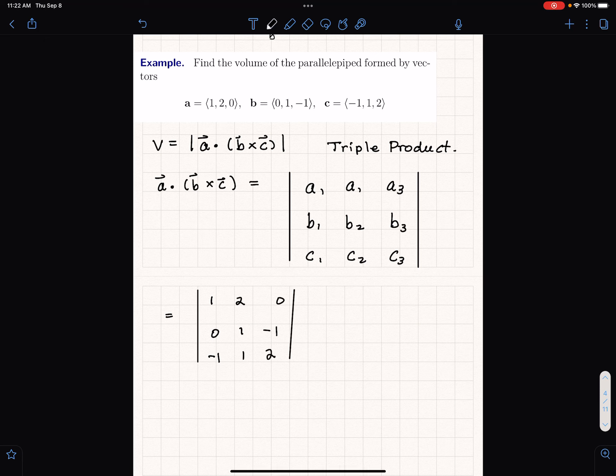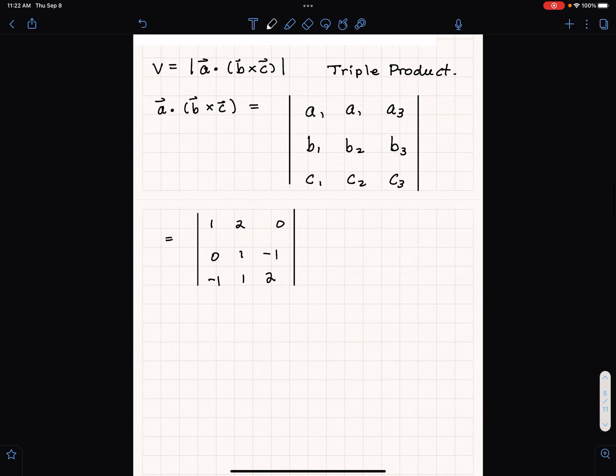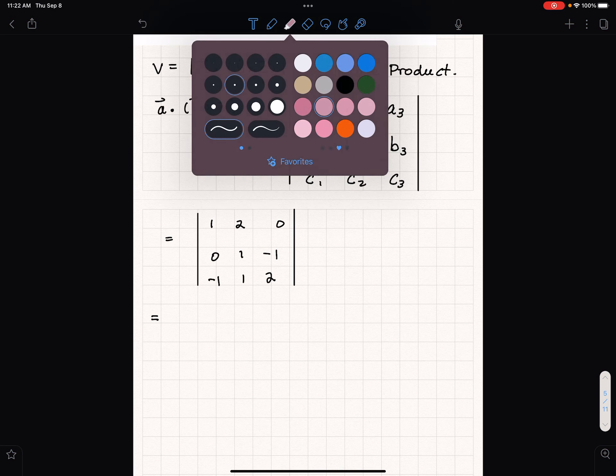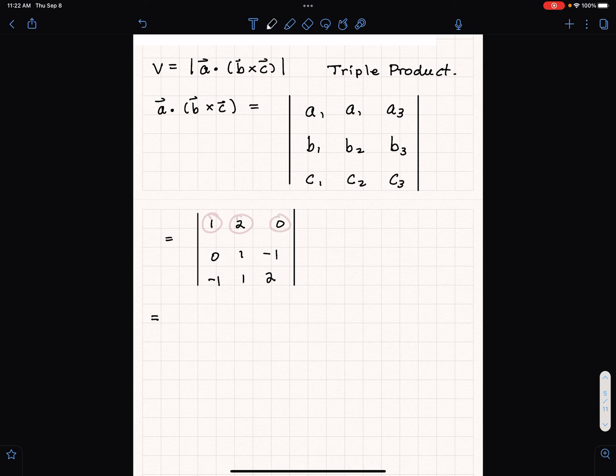What we are going to do is the determinant. I expand across the first row. I have plus that number one, that's the first entry in the first row first column, and I multiply that by a determinant. The determinant is found by eliminating the row and the column that contains this number one.